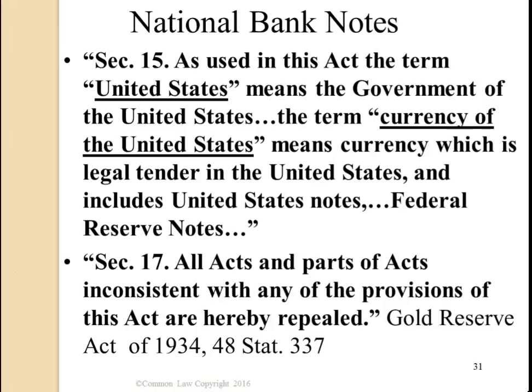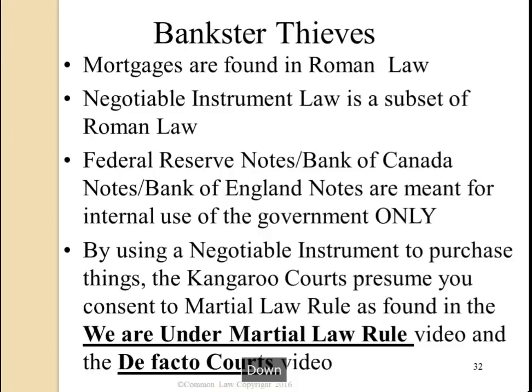Section 15 says: 'The term United States means government of the United States. The term currency of the United States means currency which is legal tender in the government of the United States, and includes United States Notes and Federal Reserve Notes.' They're meant for internal use of the government only. All mortgages are found in Roman law. Negotiable instrument law is a subset of Roman law. Federal Reserve Notes, Bank of Canada Notes, Bank of England Notes are meant for internal use of the government only.